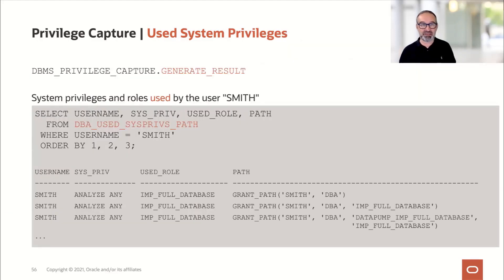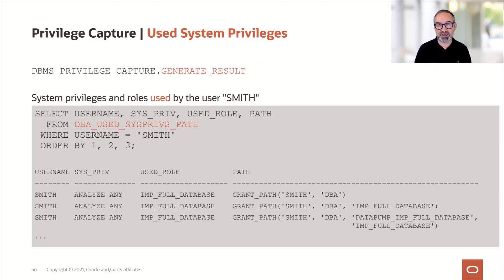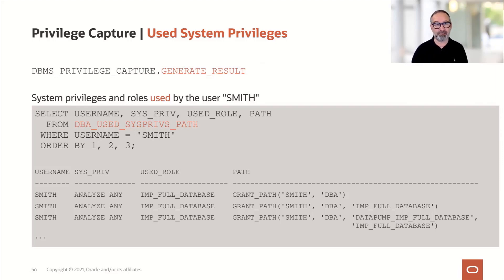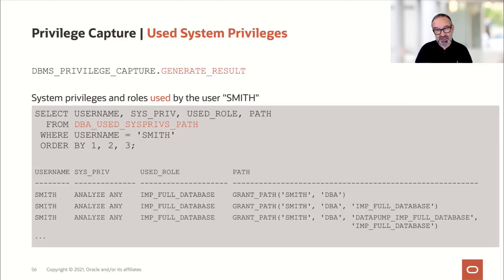What information do I get? When I generate the results, some views in the database get populated. There's a long list of views — I just pick two examples here. The DBA_USED_SYSPRIVS_PATH view tells me that user Smith had ANALYZE ANY and got it through the IMP_FULL_DATABASE role. So you see the exact path how the user got to that privilege, and that they used it.